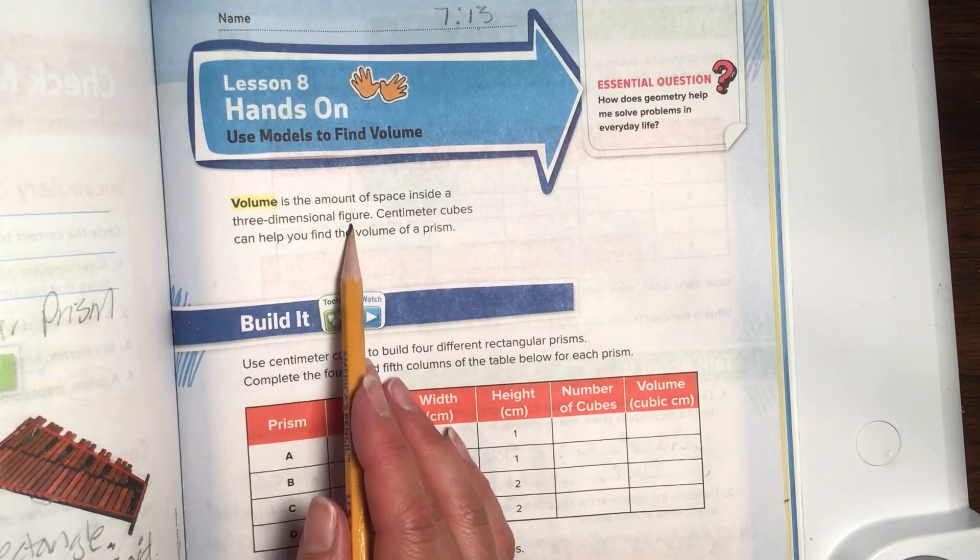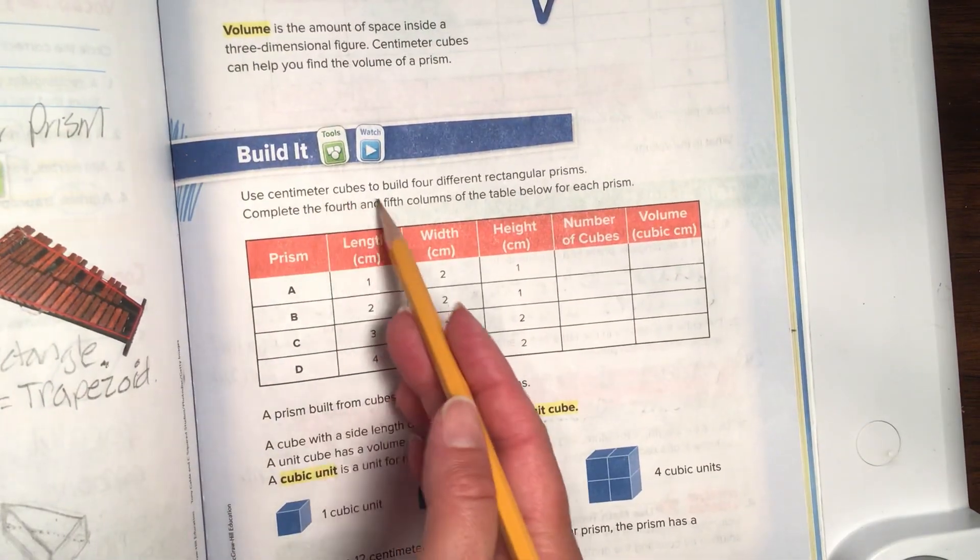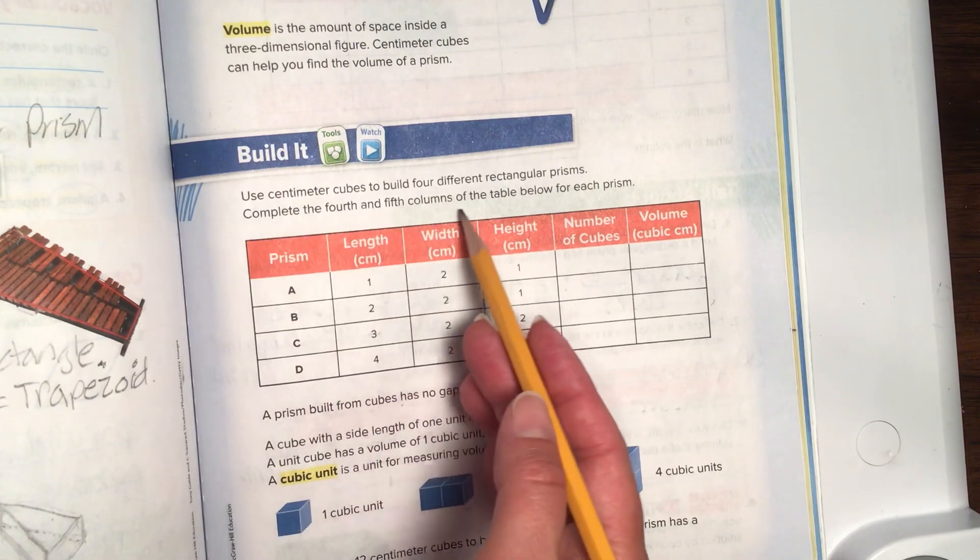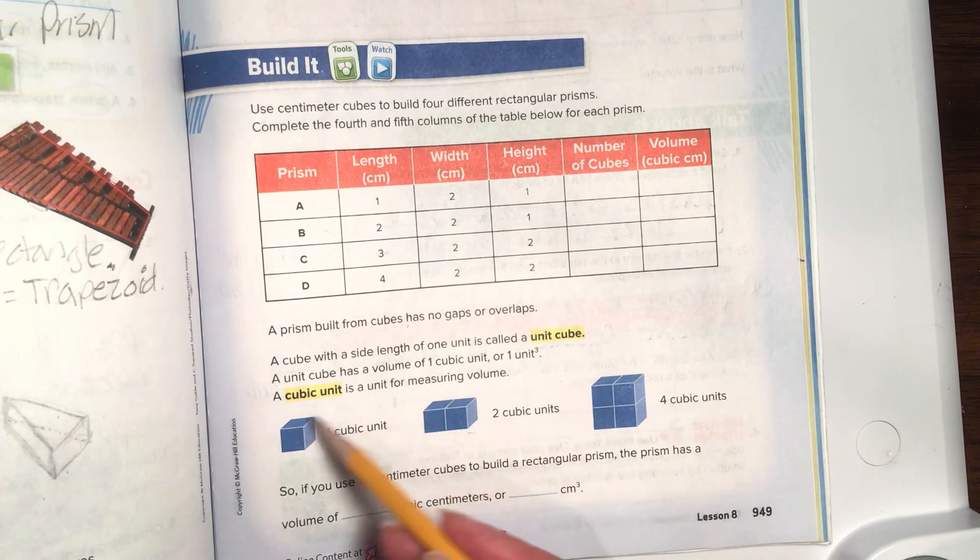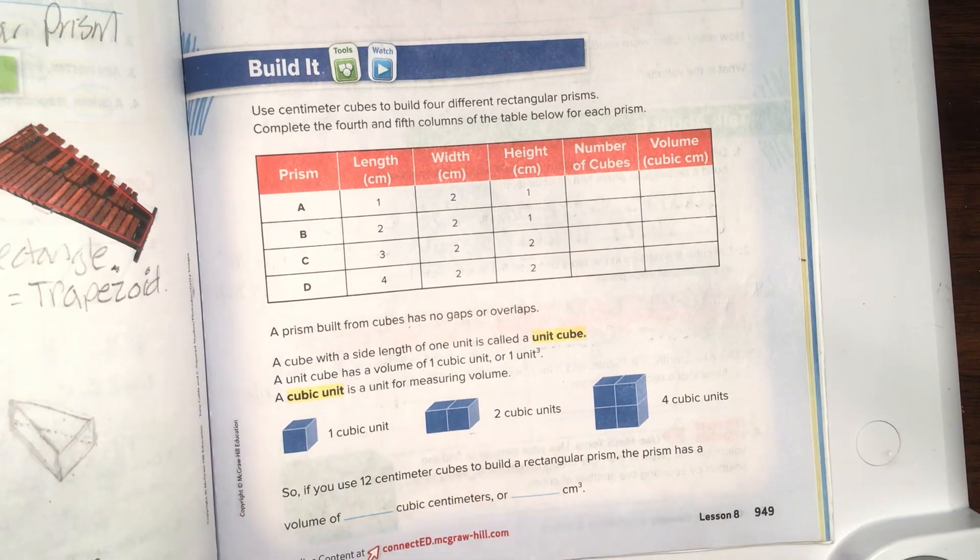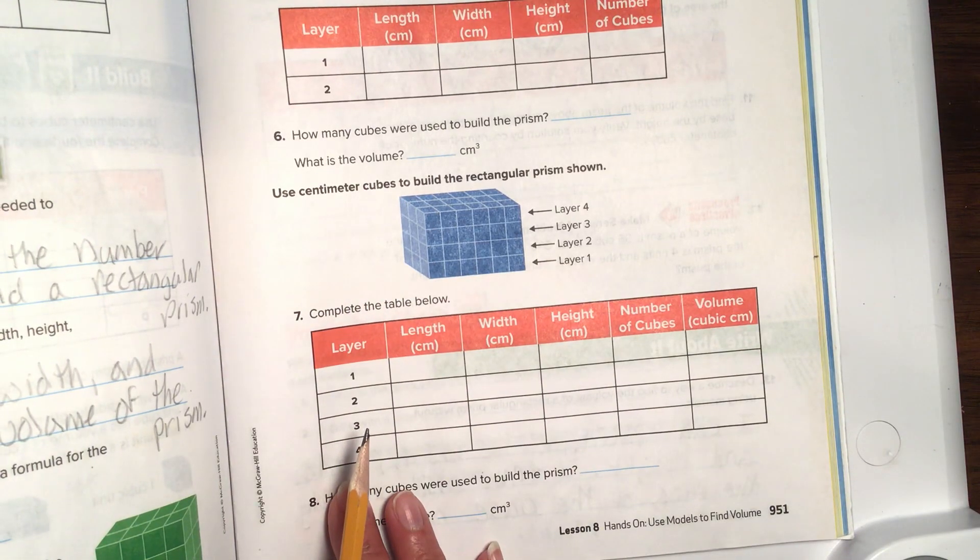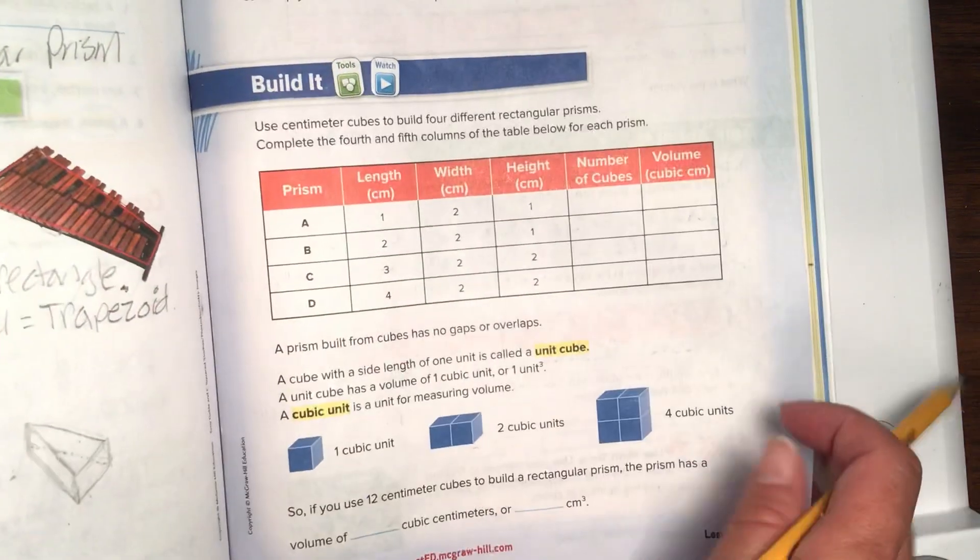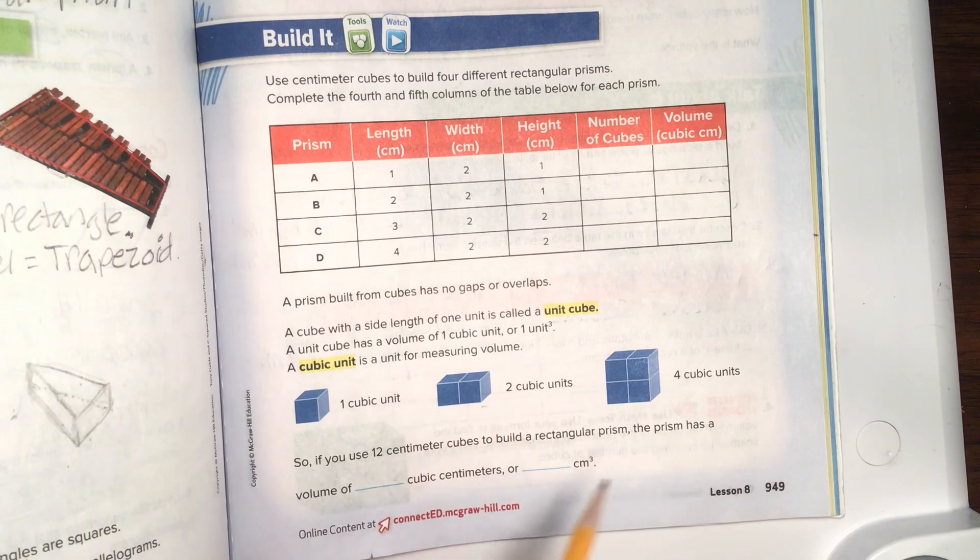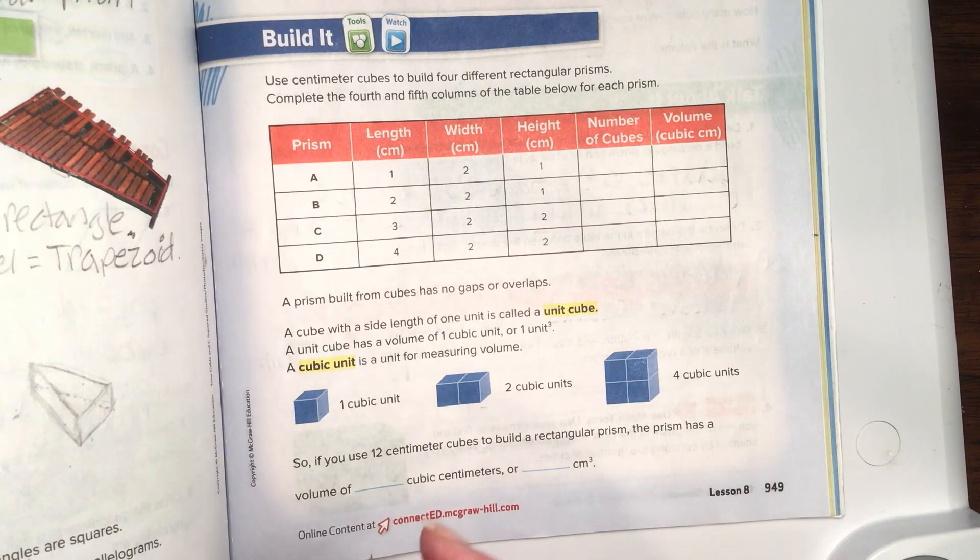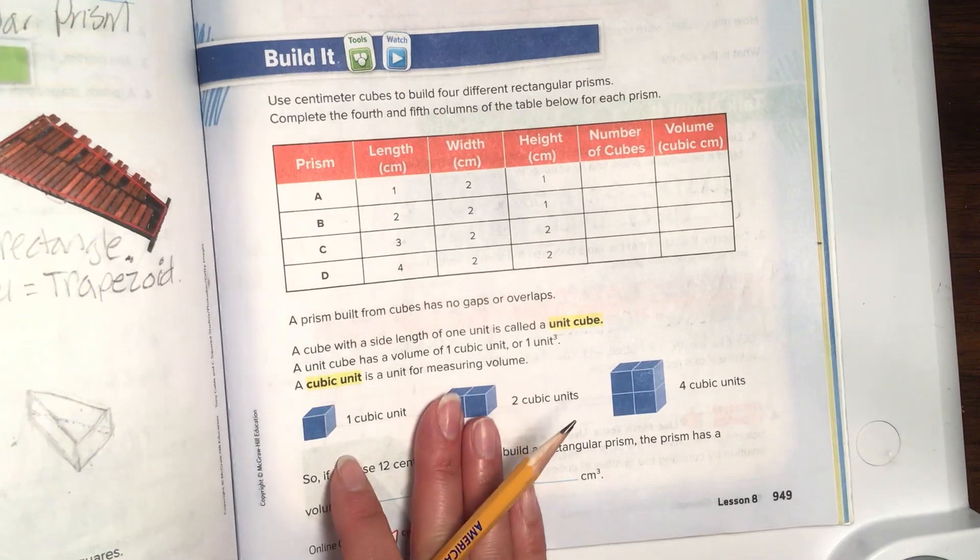Volume is the amount of space inside a three-dimensional figure. Centimeter cubes can help you find the volume of a prism. Use centimeter cubes to build four different rectangular prisms. Complete the 4th and 5th columns of the table below for each prism. So, what you are doing, these are the centimeter cubes you are going to use to build the rectangular prisms. It's like you are stacking blocks or Lego bricks that are all the same size. And if you watched the Math Antics video, he explained the volume of a prism like this is a cardboard box filled with ice. Don't worry, it will make more sense as we go along.